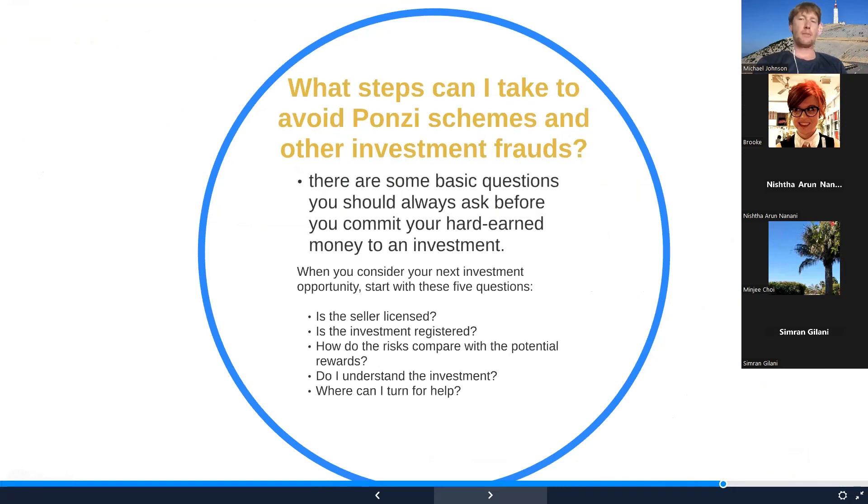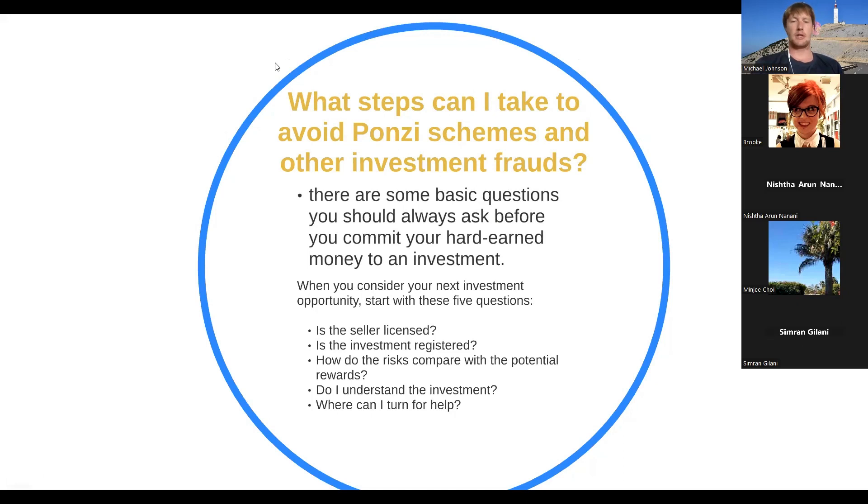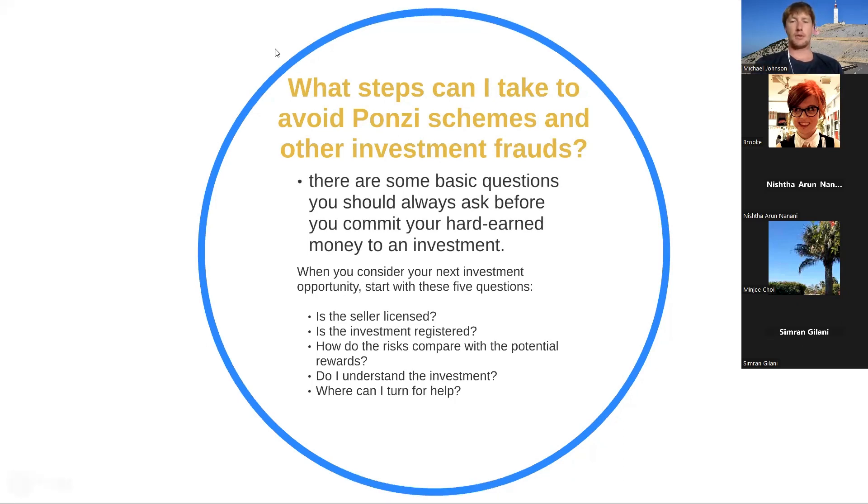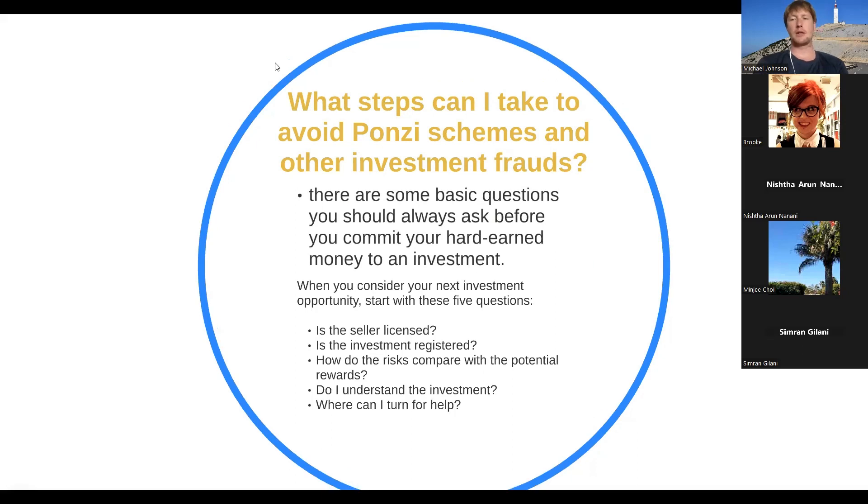So what steps can I take to avoid Ponzi schemes and other investment frauds? There are some basic questions you should always ask before you commit your hard-earned money to investment. When you consider your next investment opportunity, start with five questions: Is the seller licensed? Is the investment registered? How do the risks compare with potential rewards? Do I understand the investment? And where can I turn to for help? So ask those questions. Also contact the Ontario Securities Commission if you have questions and are worried about something being a Ponzi scheme.